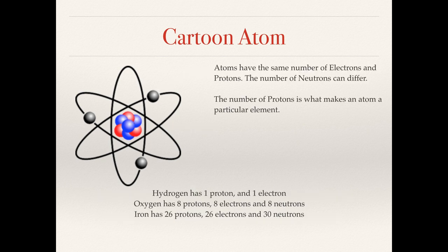Another example, oxygen: eight protons, eight electrons, eight neutrons. Iron: 26 protons, 26 electrons, but 30 neutrons. The number of neutrons is not necessarily the same as the number of protons or electrons.